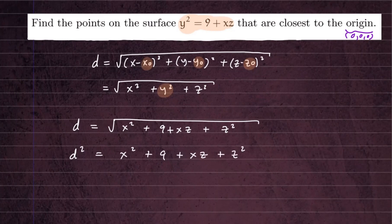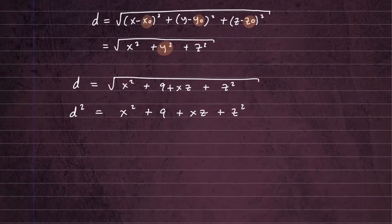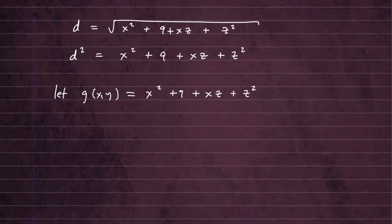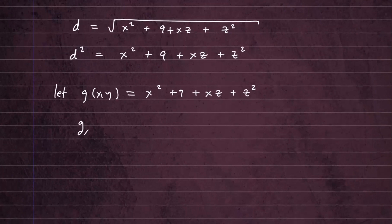Let's go ahead and get rid of the square root. So D squared equals X squared plus 9 plus XZ plus Z squared. This is the function we want to find partial derivatives of to find maximum or minimum. Instead of calling it D squared, let's call it G of X and Z — that's our distance squared function. So G(x,z) = X squared plus 9 plus XZ plus Z squared. Note: this is a function of X and Z, so be mindful of that.